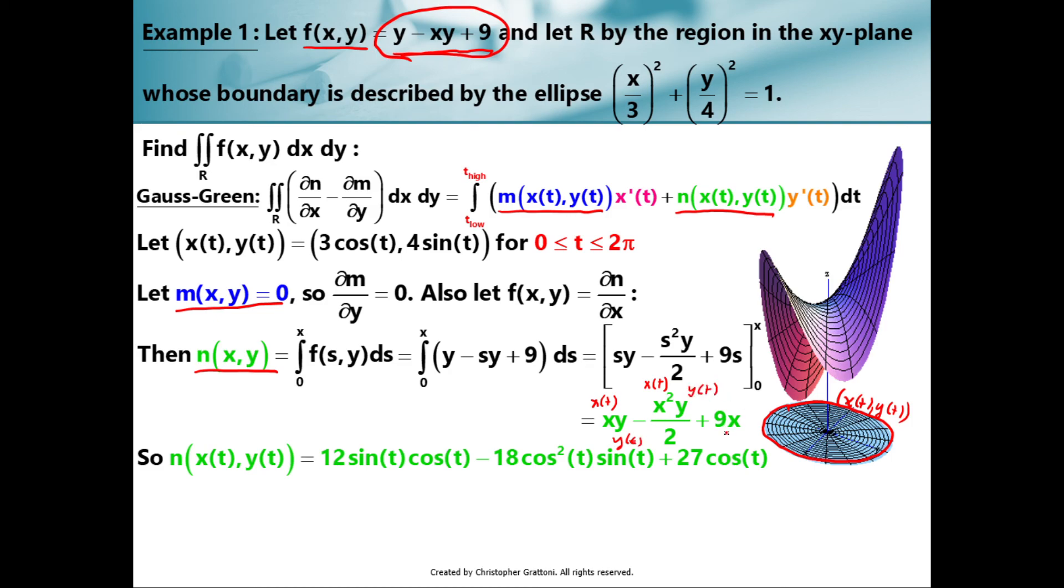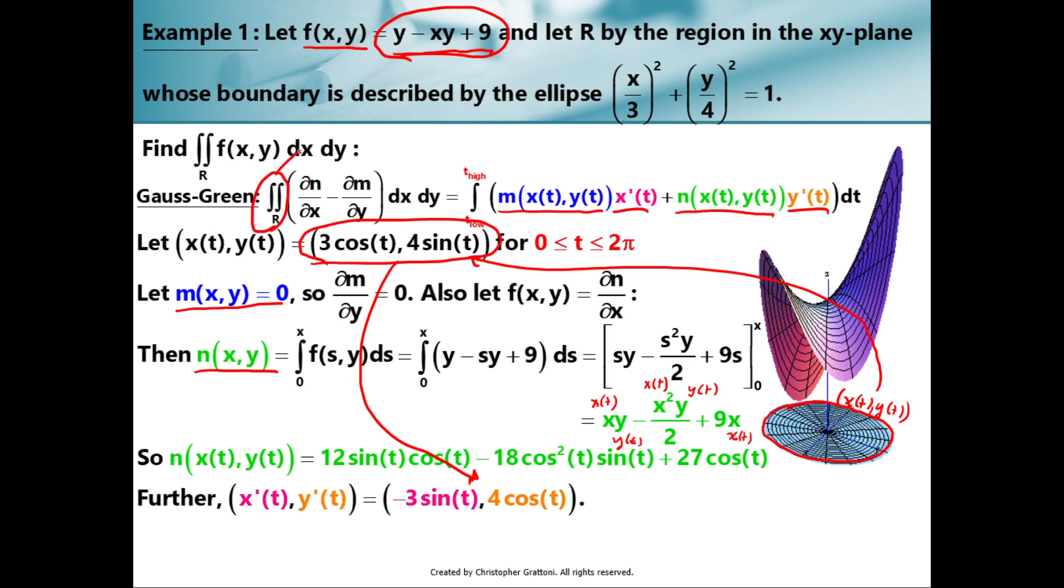Now you'll notice I'm kind of color coding things here. I'm trying to line up the things that we're computing with the Gauss-Green formula so that you can see where everything is going to eventually be plugged in. M is going to be zero. I have n(x, y) here. I need to now just write that as n(x(t), y(t)), because the formula doesn't ask for n(x, y). It asks for n(x(t), y(t)). So I'm going to replace all instances of x with x(t). And I'm going to replace all instances of y with y(t). And we know what our x(t) and our y(t) are. Because we figured that out ourselves. That's the parameterization of this boundary curve here. It's 3cos(t), 4sin(t). So you plug that all in. And it is kind of a mess.